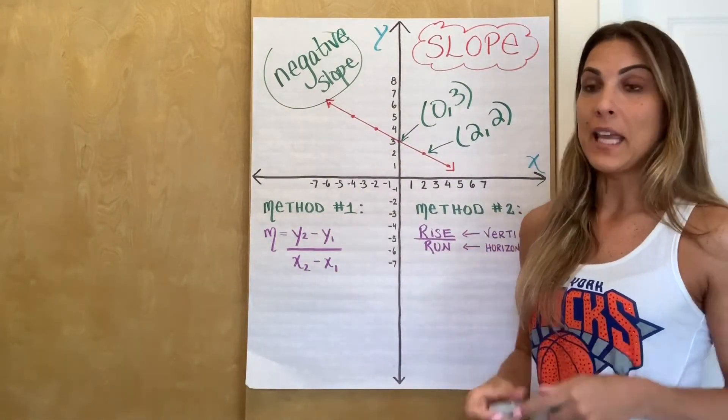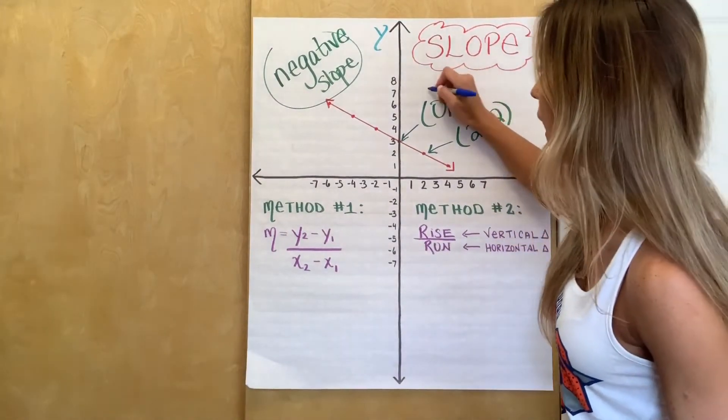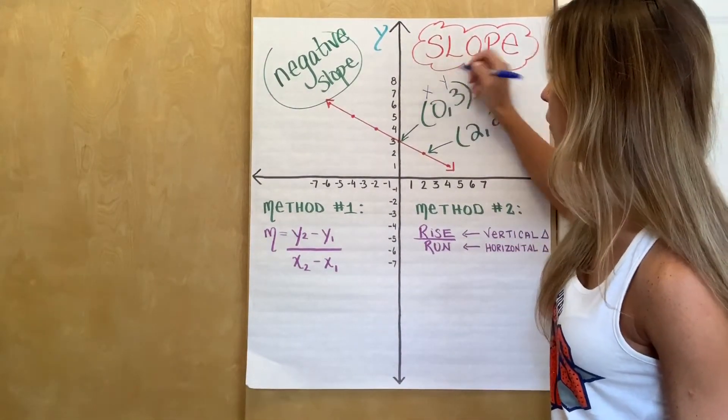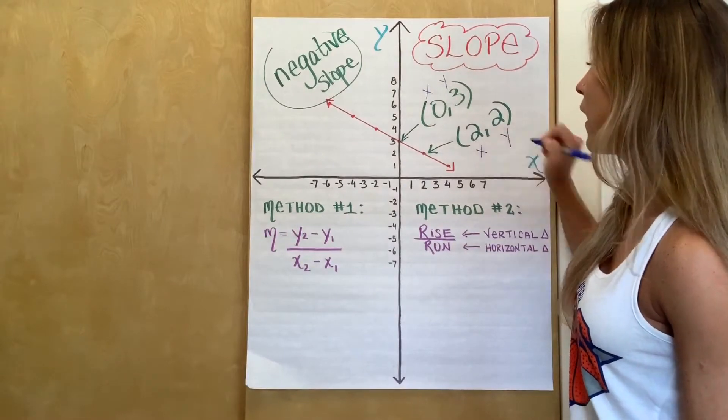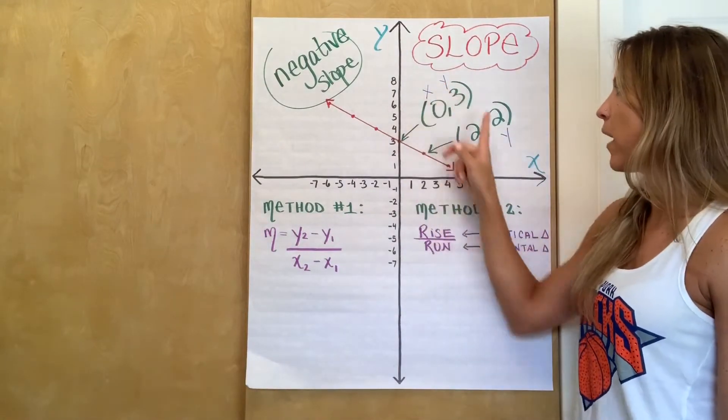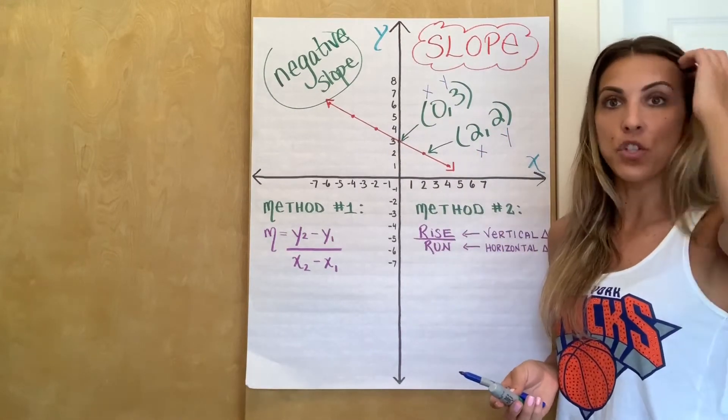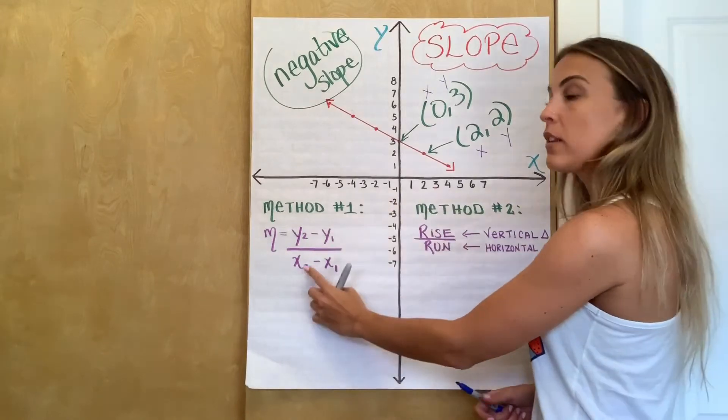And now the next step is to label these points. So every ordered pair has an x and a y, right? An x and a y. And if you can't remember the order, just remember that it's alphabetical order. So an x and a y, x and a y. And now to differentiate the two x's that I have and the two y's that I have, that's where these little labels are going to come in.